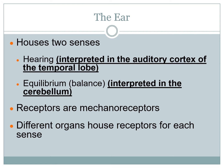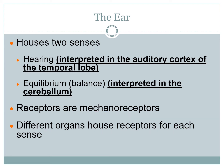From chemoreceptors we'll move on to mechanoreceptors and talk about the ear. The ear is the housing unit for two different types of senses: hearing and equilibrium. Hearing is interpreted within the auditory cortex of the temporal lobe, while equilibrium is interpreted within the cerebellum. Both are caused by mechanoreceptors and controlled by two different receptors within the same organ.